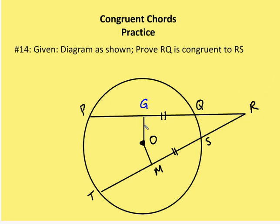The first thing I'm going to do is draw two segments — one from O to G and one from O to B. I know that OG and OB represent the distance from the center to the chord, and since the two chords are congruent, I'm bisecting the two chords, and their bisections GQ and BS are congruent.